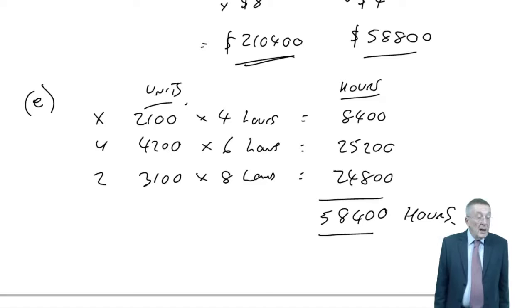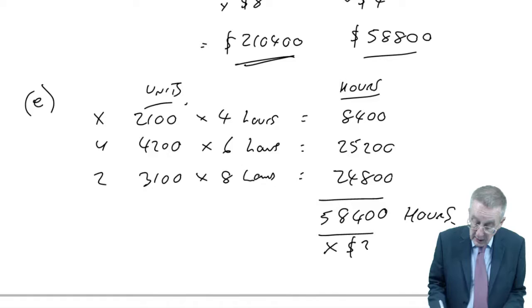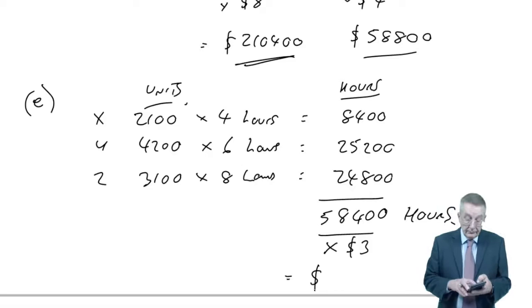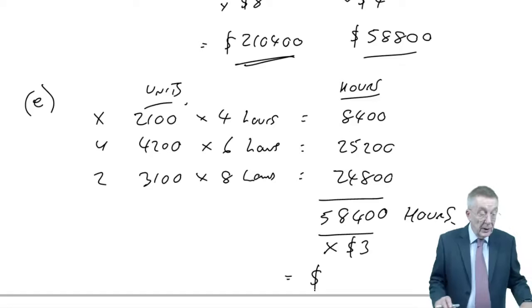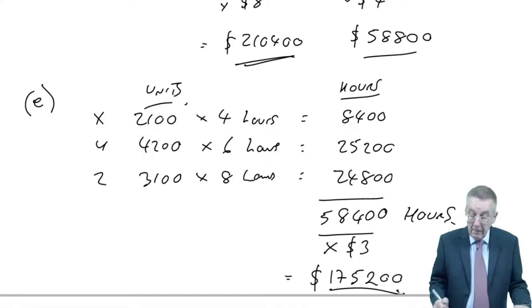So, human resources need to know how many hours we have available. And they also want the value. Well, labour is paid $3 an hour from the question. So, the amount we're budgeting on spending on labour, $175,200.